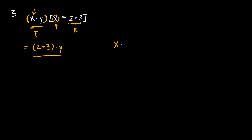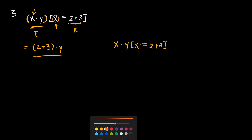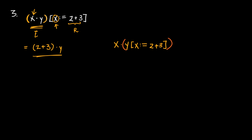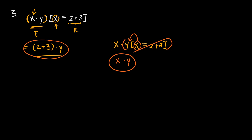Again, it's a good time to point out the significance of parentheses around the E expression. Had we been given X times Y with all occurrences of X replaced by Z plus 3, but without brackets around E, we'd be forced to assume the substitution applies only to the expression Y. There's no X to replace in Y, so the substitution does nothing and we'd get X times Y — a very different result from (Z plus 3) times Y.